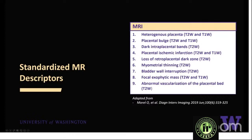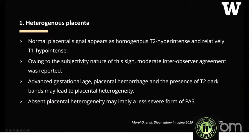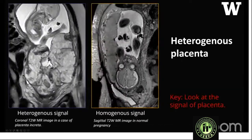The first descriptor is heterogeneous placenta. Normal placental signal is homogeneous, T2 hyperintense, and relatively T1 hyperintense. There is moderate inter-observer agreement since this is a subjective feature. Heterogeneity can result from advanced gestational age, hemorrhage, and T2 dark bands. Absent heterogeneity implies either absence of PAS or a less severe form. This comparison shows a normal homogeneous placenta versus a heterogeneous placenta — the latter was a case of placenta increta.